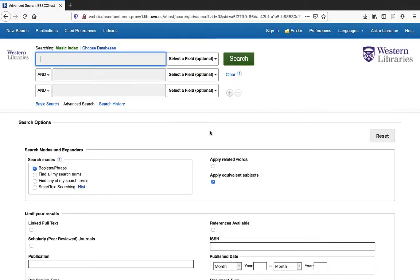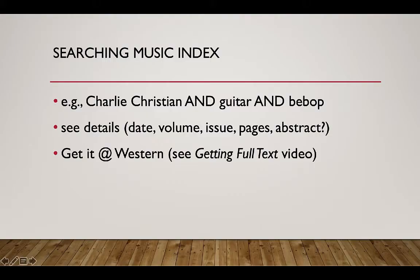And here we are in MusicIndex. Searching MusicIndex is fairly straightforward. In this case, we'll look for articles on Charlie Christian and Guitar and Bebop. Once you've found some search results, take a look at their details, including the date of publication, volume number, issue number, page numbers, and abstract if there is one. If you'd like to get a copy of any of these articles, click the Get it at Western button. See our Getting Full Text video for more details.